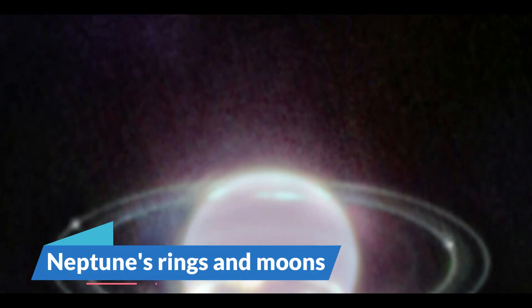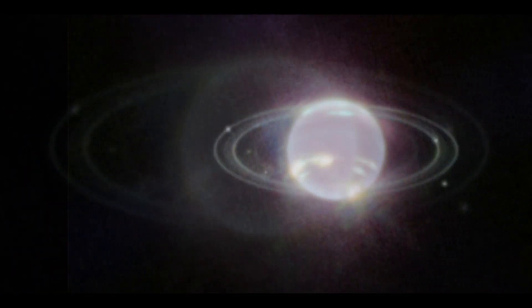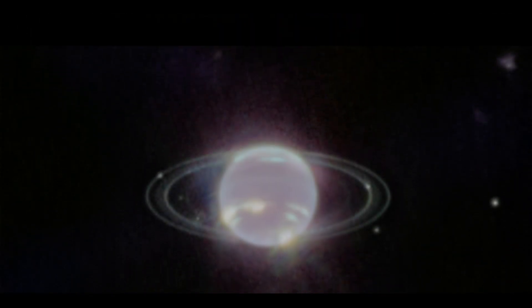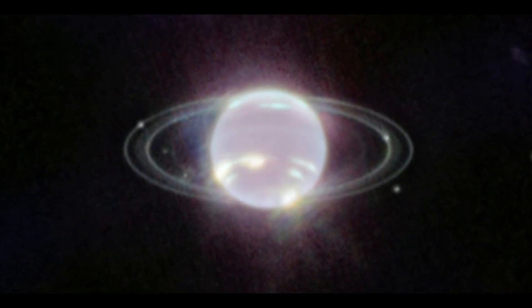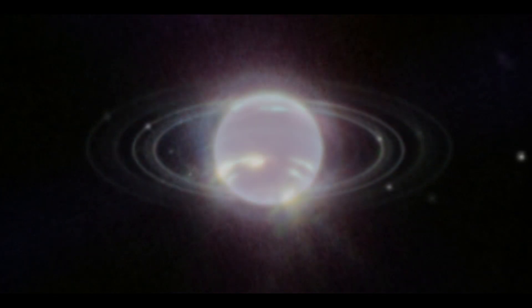Number 2. Neptune's Rings and Moons. The James Webb Space Telescope has obtained its first image of Neptune, the solar system's ice giant, revealing the planet in a completely new light. The image provides astronomers with their best sight at Neptune's frozen rings in 32 years, since the Voyager 2 probe sailed by on its way out of the solar system.